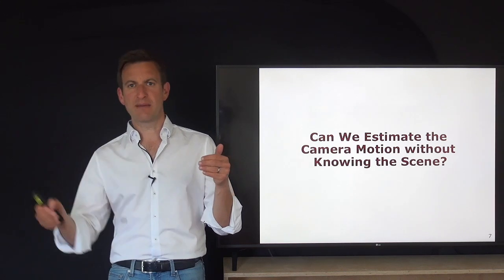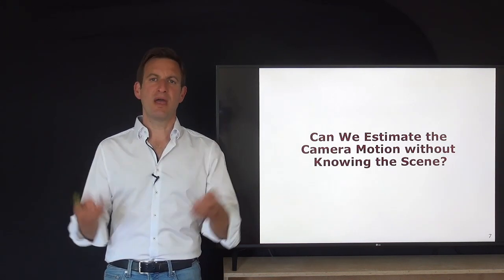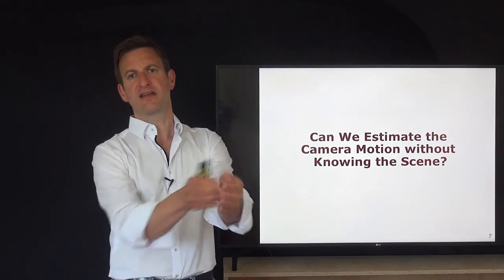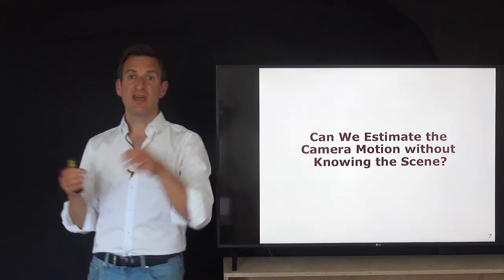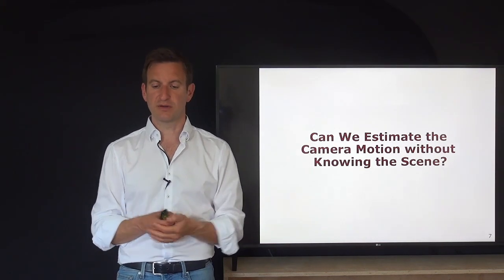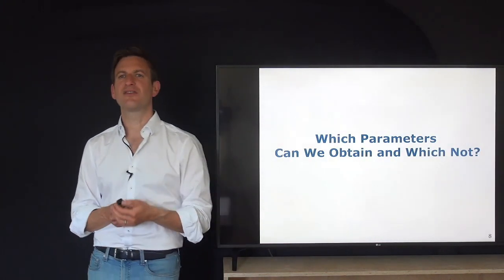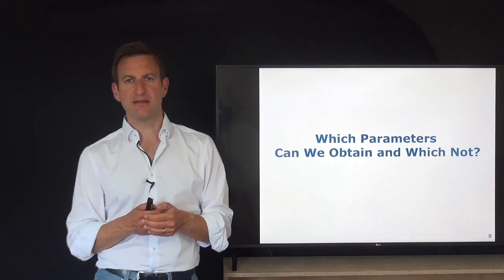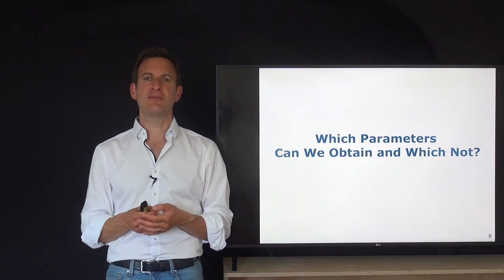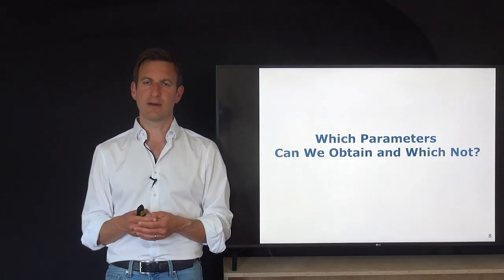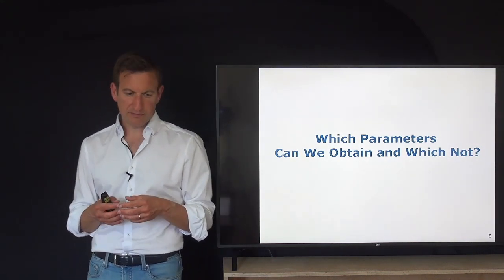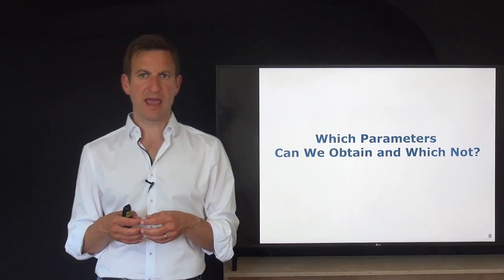We have two images — one from each camera — and the question is: can we describe the movement of the camera in the scene? We need to ask which parameters we can obtain without any scene knowledge, and which parameters we cannot estimate at all. One thing that is hard to estimate from camera information is scale.